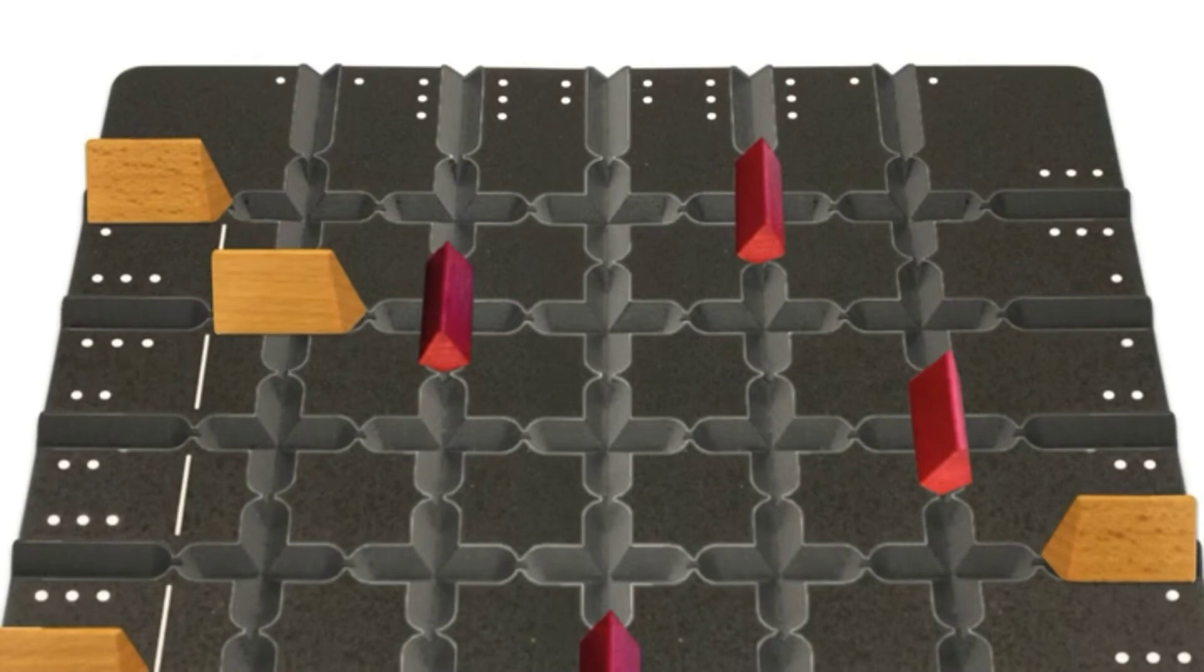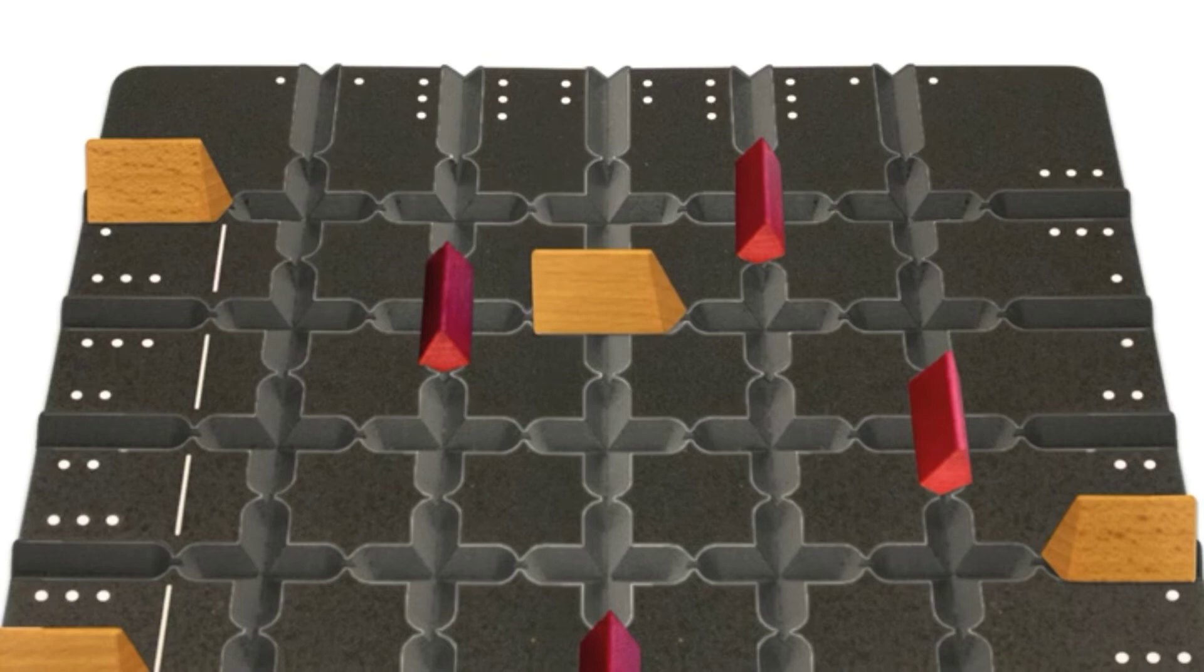During its movement, if one of your pieces passes over one or more of your opponent's pieces, it jumps over them and stops its movement on the first empty space immediately after, even if it still had movement points remaining.